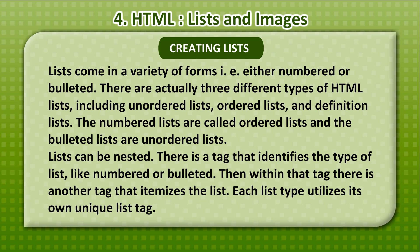Lists can be nested. There is a tag that identifies the type of list, like numbered or bulleted. Then within the tag, there is another tag that itemizes the list.